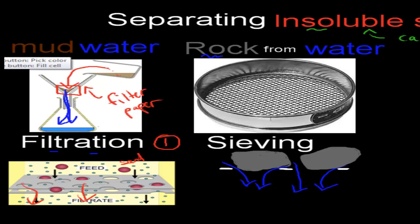Now, a sieve is similar to a filter paper, but the actual pores are a bit bigger. As you can see here, these pores are quite big. They're quite a bit bigger than the ones in filter paper. But if we put, for example, rock and water in here, so we put rock and water, what's going to happen is that those rocks are going to get stuck.